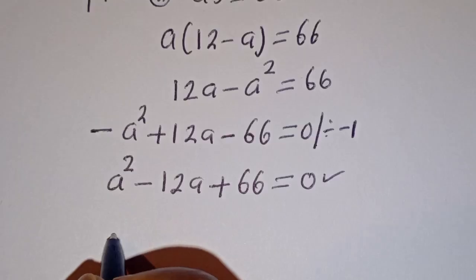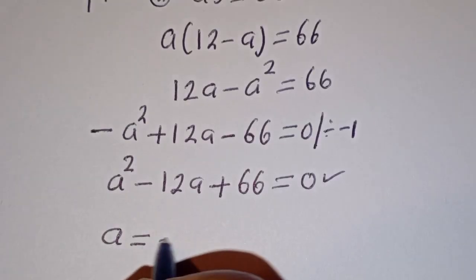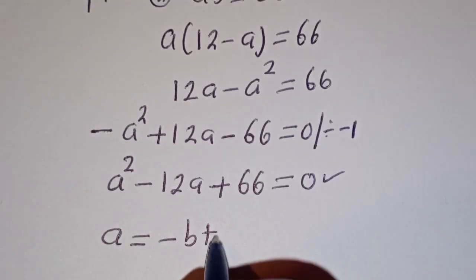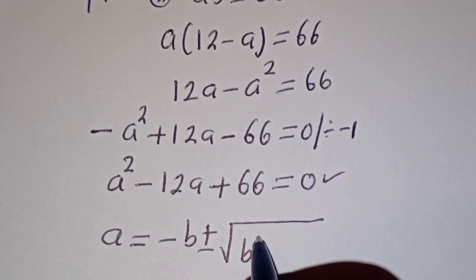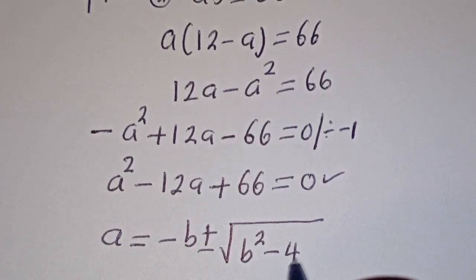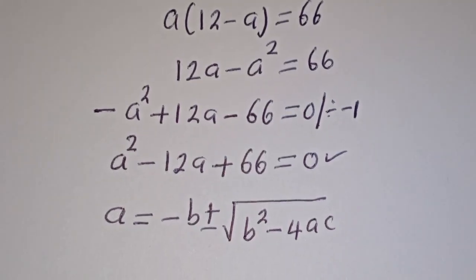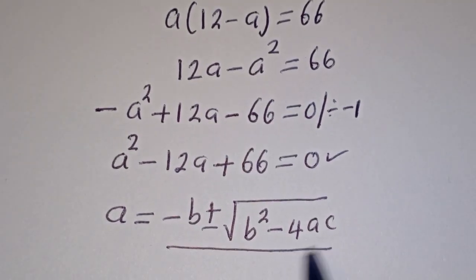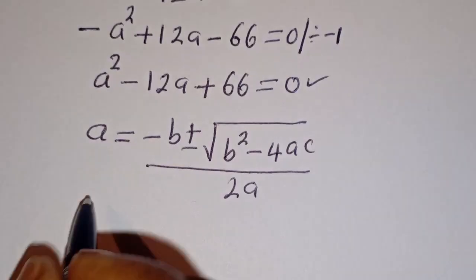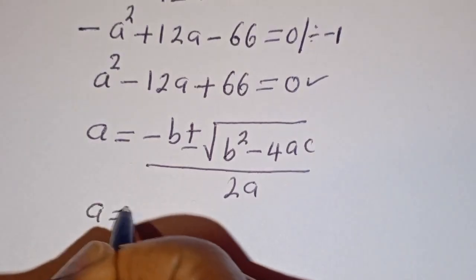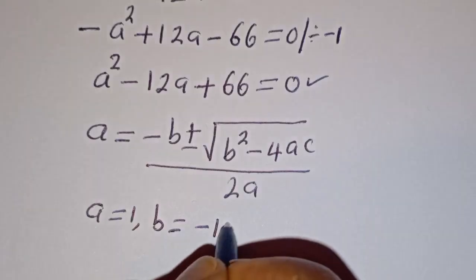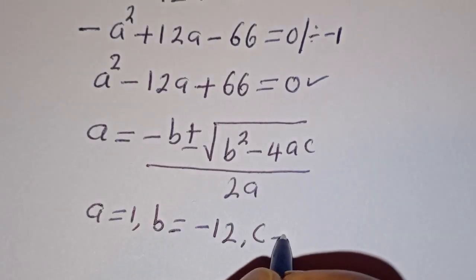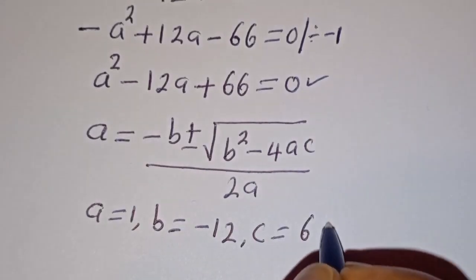The quadratic general formula is given as x equals minus b plus or minus square root of b squared minus 4ac, divided by 2a. Where a is equal to 1, b is equal to minus 12, and c is equal to 66.